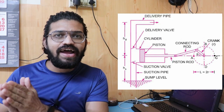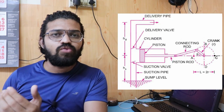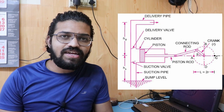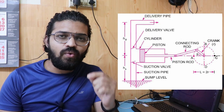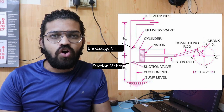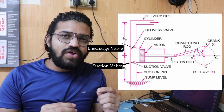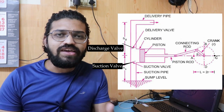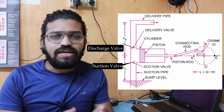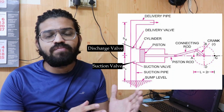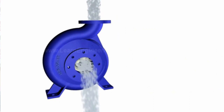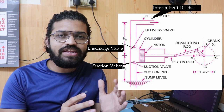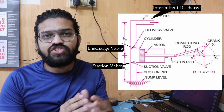The connecting rod is connected to the crank, and the crank is completely driven by the electric motor. This single acting reciprocating pump has two valves on one side — a suction valve and a discharge valve. Liquid enters from the suction valve, gets compressed, and is delivered at higher pressure. However, unlike the centrifugal pump which gives continuous discharge, the reciprocating pump gives intermittent flow.